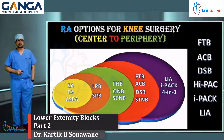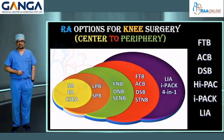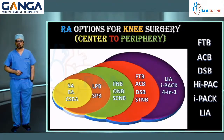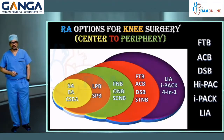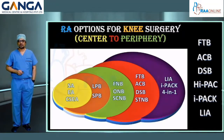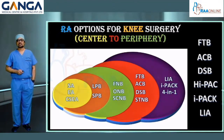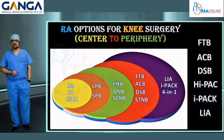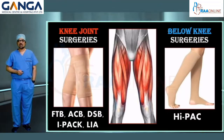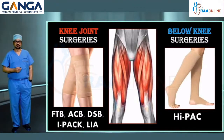Among various regional analgesia options for knee surgery, from center to periphery, today we will discuss about femoral triangle block, adductor canal block, dual subsartorial block, high volume proximal adductor canal block, infiltration between popliteal artery and capsule of knee joint (IPAC block), and local infiltration analgesia (LIA block). These blocks are considered as motor-sparing blocks for knee joint surgery, except the high PAC block which is described for below-knee surgeries.